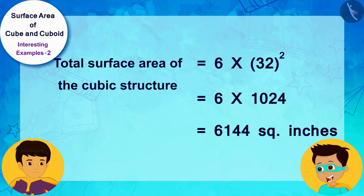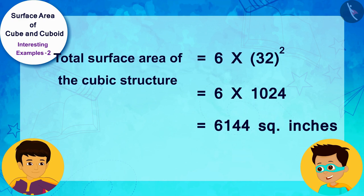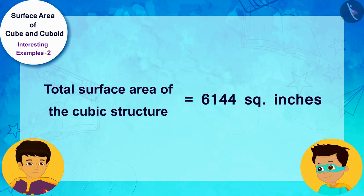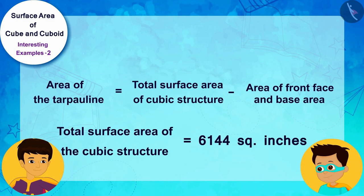Look Thomas, by solving it in this way we can see that the total surface area of the cubic structure is 6,144 square inches. Now we just have to subtract the areas of the front and base area from it.